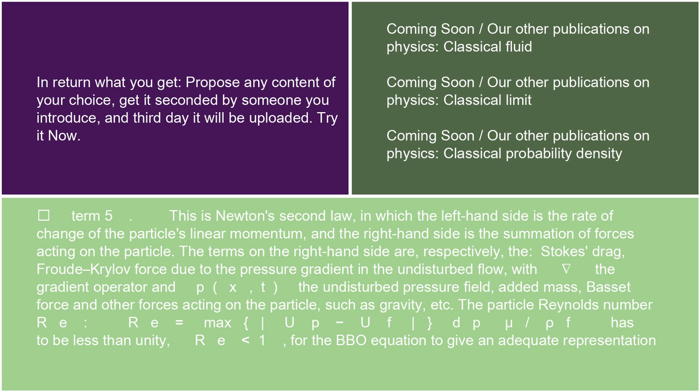with ∇ the gradient operator and p(x,t) the undisturbed pressure field, added mass, Bassett force, and other forces acting on the particle, such as gravity, etc. The particle Reynolds number Re = max|(up - uf)dp/(μ/ρf)| has to be less than unity (Re < 1)